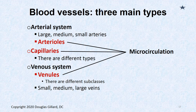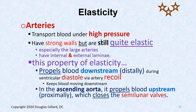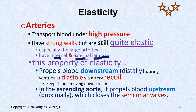There are three main types of blood vessels: the arterial system, the venous system, and capillaries. The microcirculation is a very important concept — it includes three types of vessels: arterioles, capillaries, and venules. Arteries are under higher pressure, so they have two extra layers that veins don't have — an internal and external elastic laminae — and their tunica media is thicker and stronger.